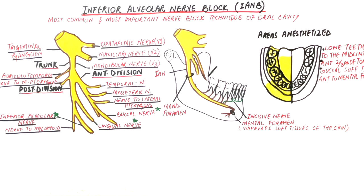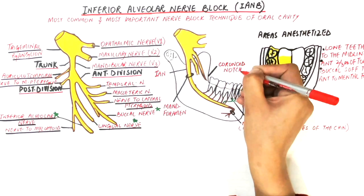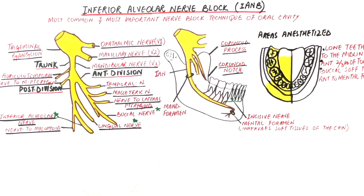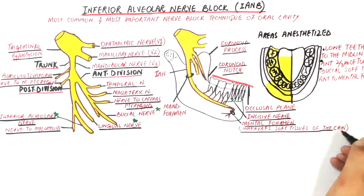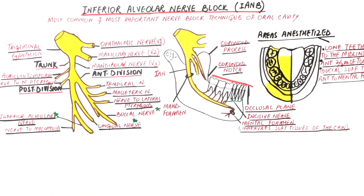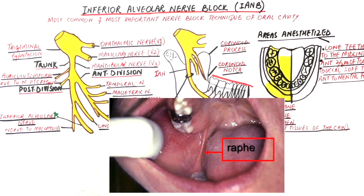The three landmarks for a profound inferior alveolar nerve block that must be recognized are the deepest point of the coronoid notch, the pterygomandibular raphe, and the occlusal plane. The coronoid notch is a small depression that lies at the anterior border of the mandibular ramus. The pterygomandibular raphe, as the name suggests, is a tiny ligament originating from the pterygoid hamulus of the sphenoid bone and inserting at the inner surface of the mandible.